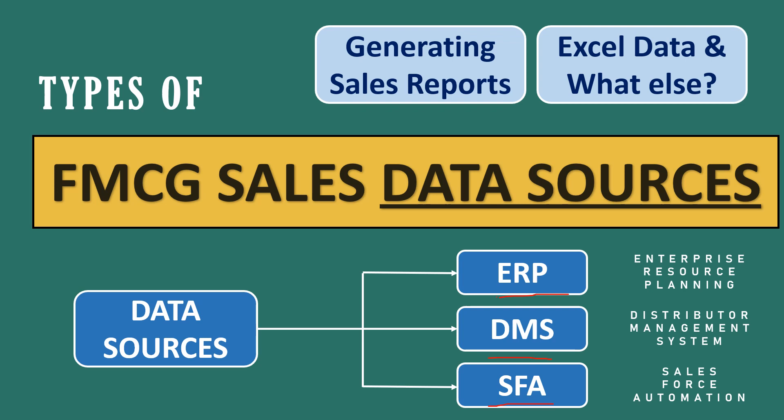First, what is ERP? ERP is Enterprise Resource Planning — this is the software through which we get the primary sales. Then DMS is Distributor Management System — this is the software installed at the distributor's place through which we can get the secondary sales. SFA is Salesforce Automation — from this we capture the order booking sales.